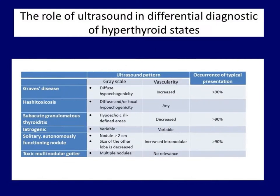A detailed differential diagnosis of hyperthyroid states is far beyond the scope of this course; nevertheless, a brief summary is given in the manual. The possible causes of hyperthyroidism are listed in the table. In the lower four cases — subacute thyroiditis, hypoechoic forms, or nodule-related hyperthyroidism — these are relatively easy to diagnose.